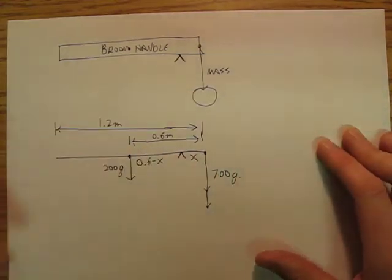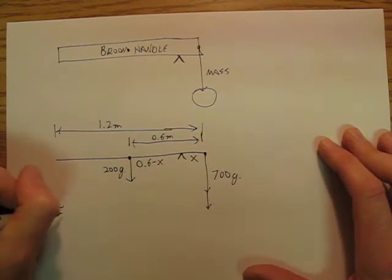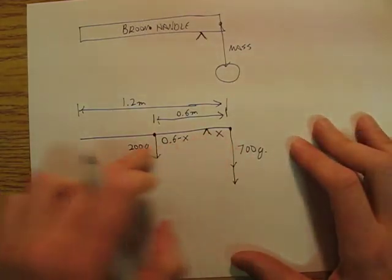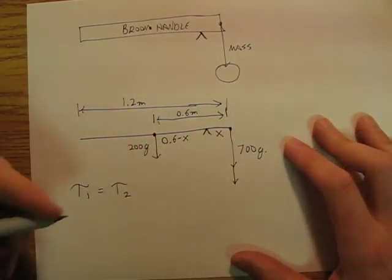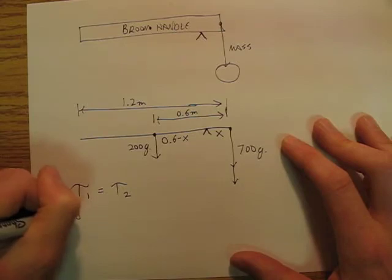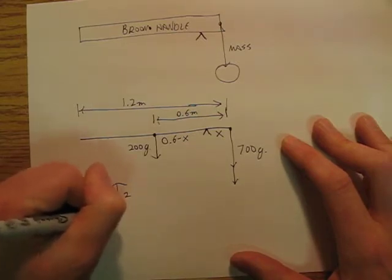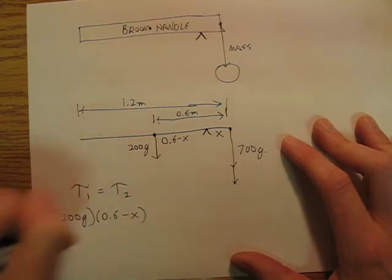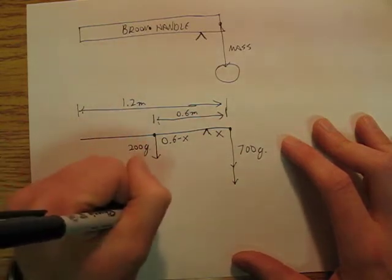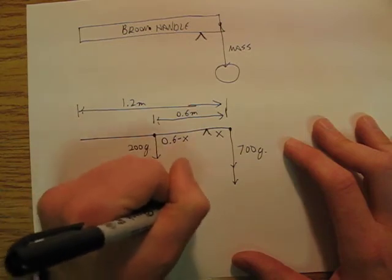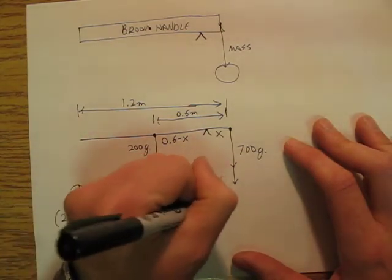Well, what I'm going to do is say that torque 1 equals torque 2, so 200 grams times (0.6 minus x) equals 700 grams times x.